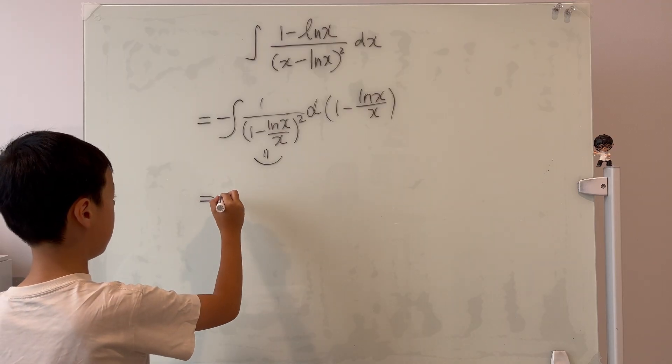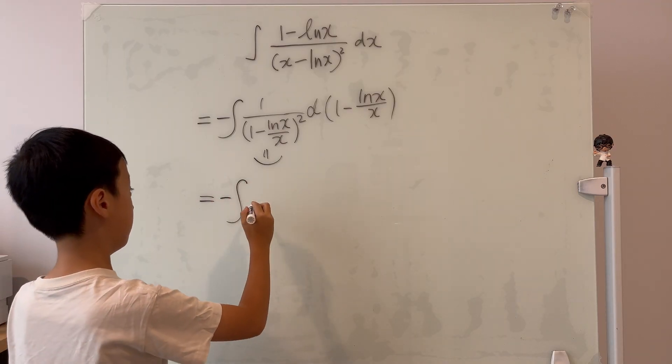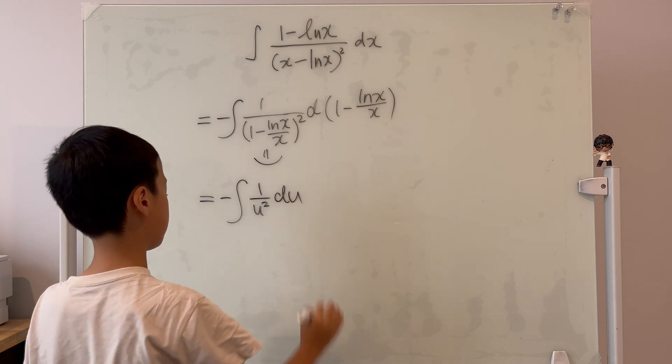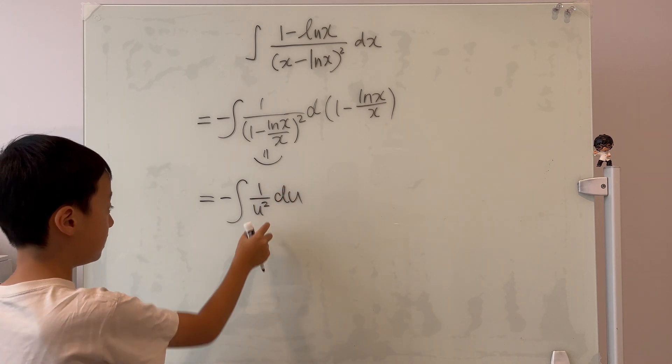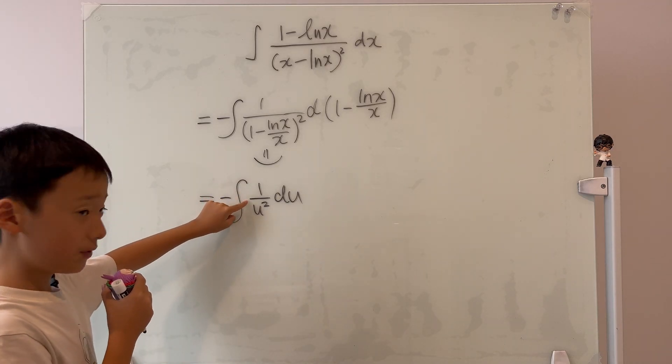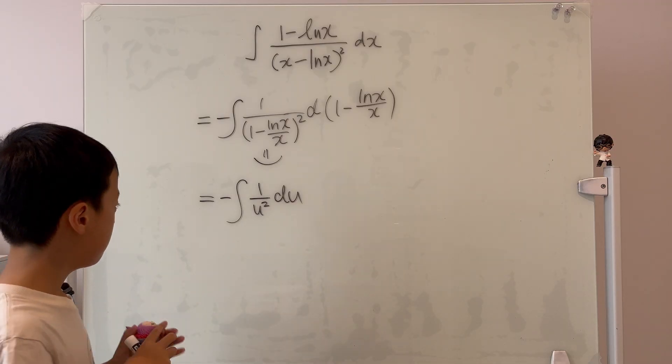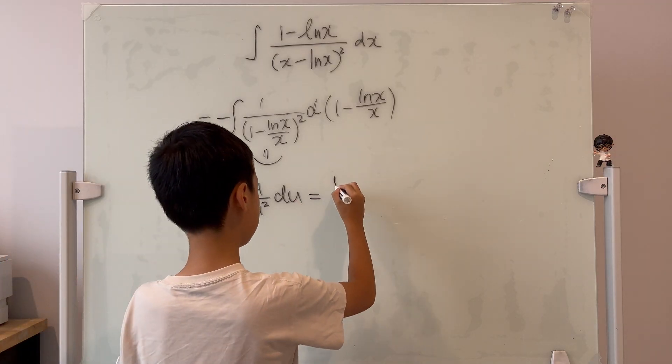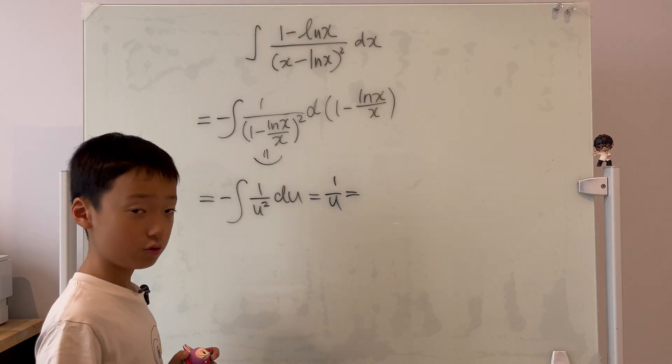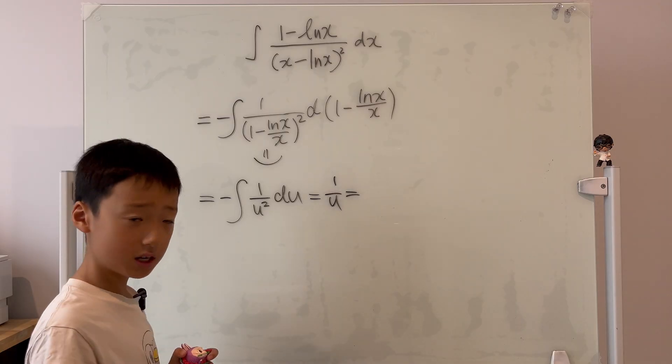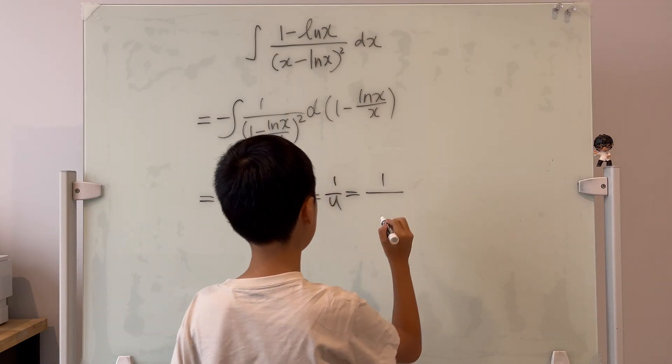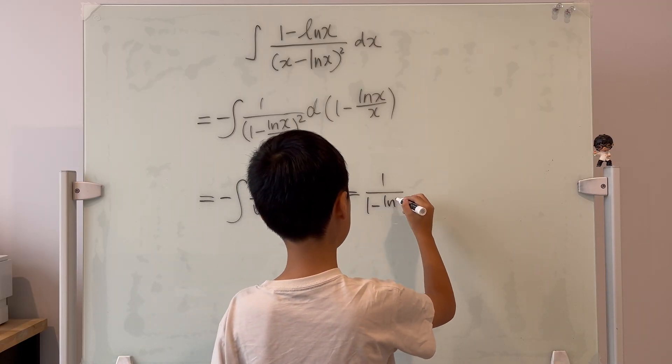So it's equal to the negative integral of smiley face squared on the bottom, 1, and then d smiley face. So here, it's very easy. If you just remove the negative, then the integral of this is negative 1 over u, but we have a negative at the front. So it's positive 1 over u. And this is equal to, you plug the u back. Or, if you want to think about it, a smiley face. So it's 1 over my smiley face, which is 1 minus ln x over x.